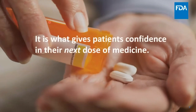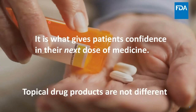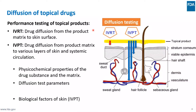Patients expect to have safe and effective medicines with every dose they are taking. The Pharmaceutical Quality mission is assuring that every dose is safe, effective, and free of contamination and defects. For diffusion testing, in IVRT the drug diffuses from the drug product to the skin surface — it is more a function of the matrix of the drug product. But for IVBT, it reflects the interaction of the released API with the skin for delivery to various layers of skin — stratum corneum or epidermis — or even down to the systemic circulation.